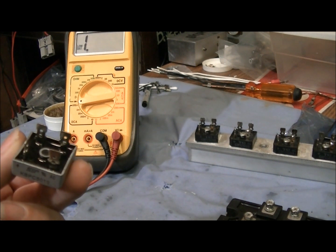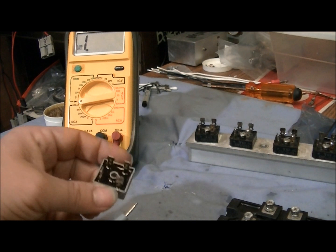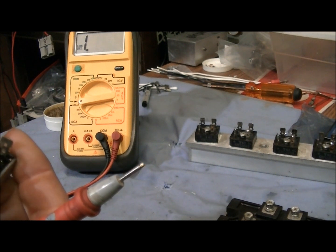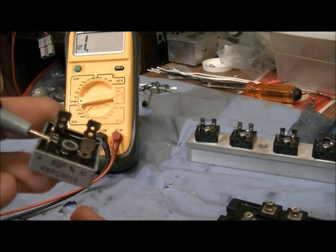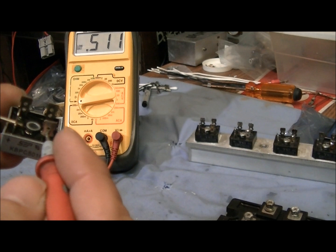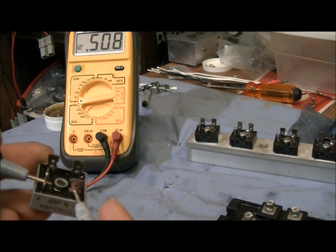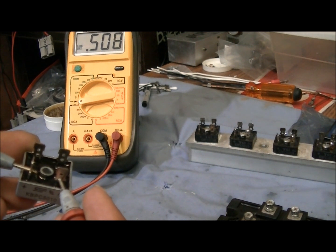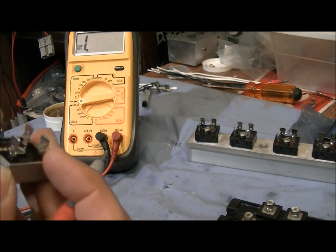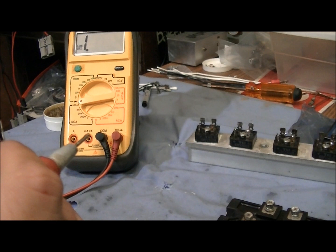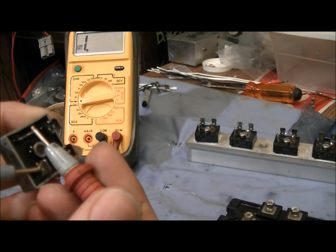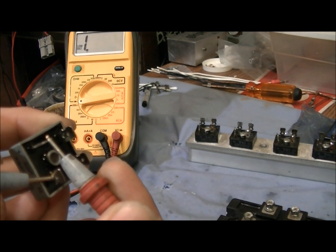It doesn't matter which way you start. For example, I'll go ahead and put my negative probe on the positive right here, and my positive probe on the AC. If you notice, I'm getting a reading. Now I'm going to switch. Put my negative probe here, my positive probe here. And I get no reading. That's exactly what you're wanting.